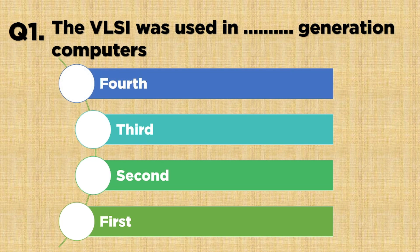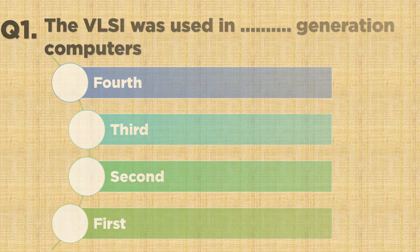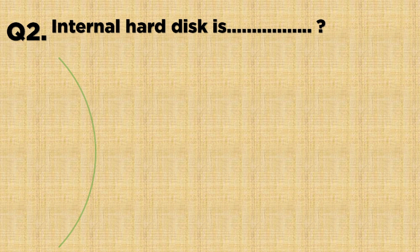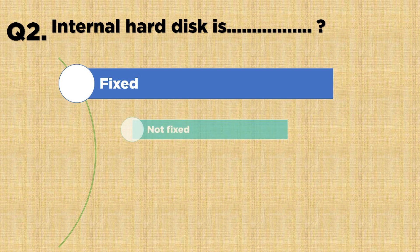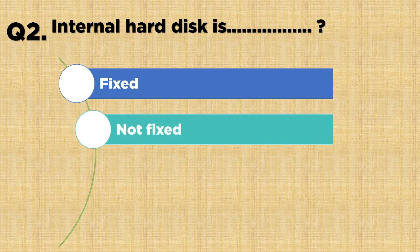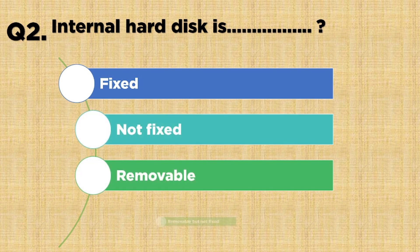The VLSI was used in 4th generation computers. Question number 2: Internal hard disk is — what? Option A: Optional. Option B: Fixed. Option C: Not fixed. Option D: Removable.